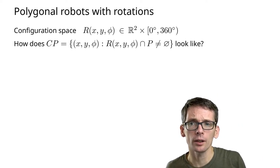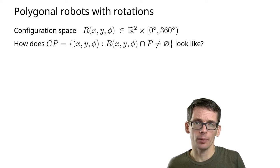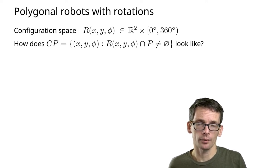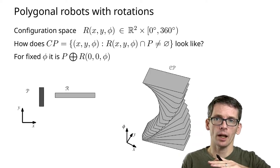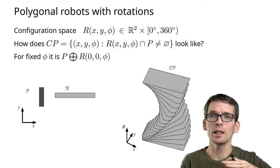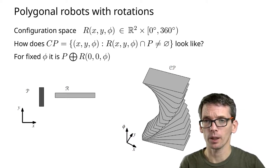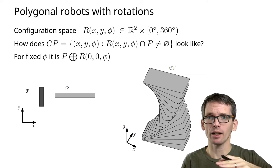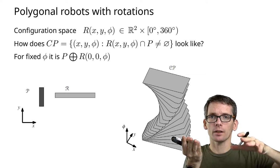How does the forbidden space of an obstacle look like? The easiest way to imagine it is to look at the 2D slices of this forbidden space. If you fix the angle, for a fixed angle,